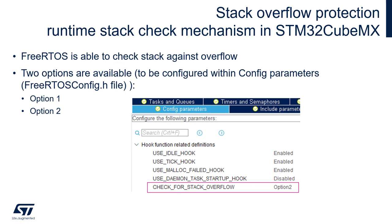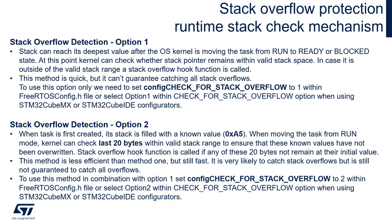FreeRTOS can detect operating system stack overflow events. There are two options. Stack overflow detection option 1: the stack can reach its deepest value after the kernel moves a task from run to ready or blocked state. At that point the kernel checks whether the stack pointer remains within the valid stack space. If it is outside the valid range, the stack overflow hook is called. This method is quick but cannot guarantee catching all stack overflows. To use this option, set configCHECK_FOR_STACK_OVERFLOW to 1 in FreeRTOSConfig.h or select option 1 in STM32CubeMX or STM32CubeIDE.